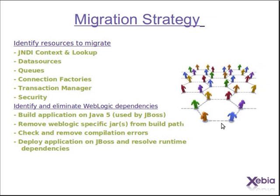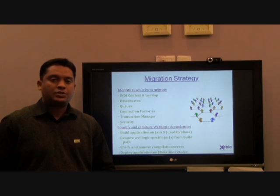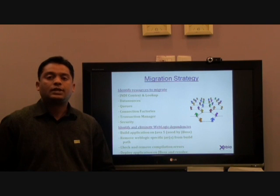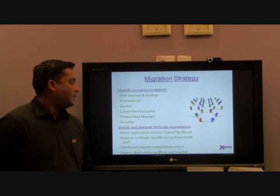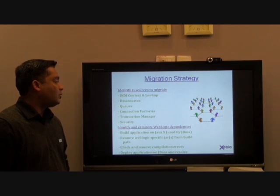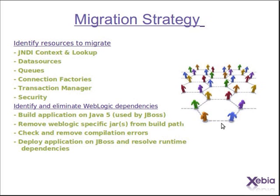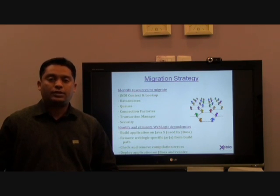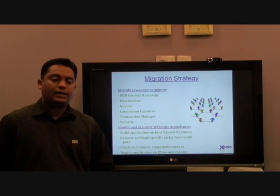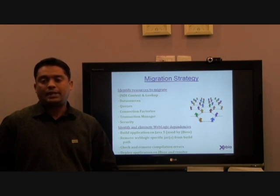So how did we go about the migration? The first step was to prepare a blueprint or a plan. We tried to identify the resources that are suspects or that would cause issues — things like data sources, JNDI context and lookup, the queues, connection factories, transaction manager, and the security configuration. Once we identified these things, we tried to set up a similar mirror image on JBoss — for example, setting up an Oracle data source with the same name as in Weblogic, along with security and other resources.